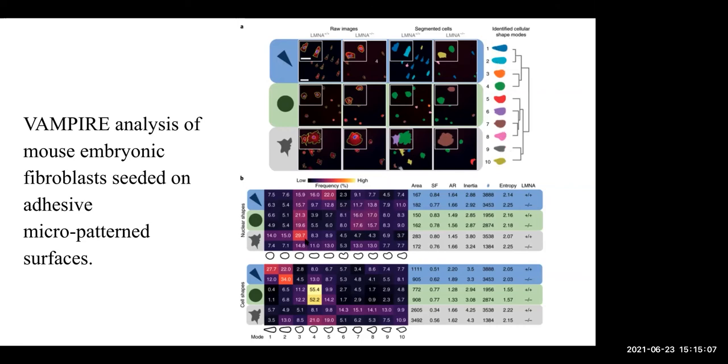And these cells are color coded based on the shape modes that are extracted at the end. And these tables here show the frequency of cell distributions with the cell shapes and the nuclear shapes. And these are the traditional geometric parameters that are calculated for the same cells. As you can see, this analysis shows the predominance of this shape mode in all these cells and the traditional parameters don't show any difference.